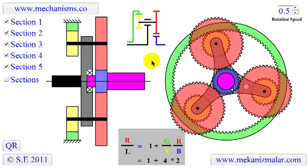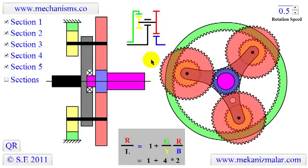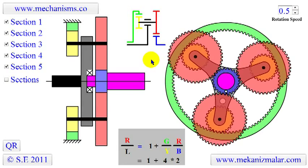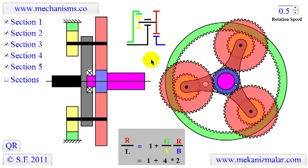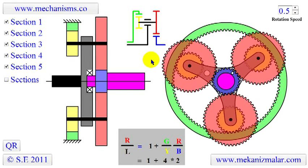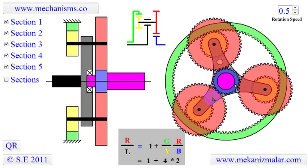The advantages of a planetary gear over parallel axis gear are compact size, higher efficiency, and low noise level. The planetary gearbox arrangement also creates greater stability due to the even distribution of mass and increased rotational stiffness.